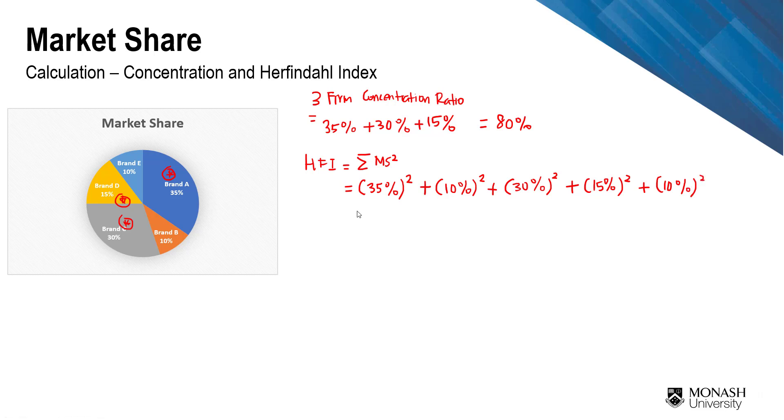Now the common mistakes that a lot of people make are these two. The 3 firm concentration ratio means that you only pick the best 3 or the largest 3. Or sometimes if it is 4 firm concentration ratio, it will be the largest 4 companies or brands. However, for the Herfindahl index, you have to add every single market share that you have in the market.